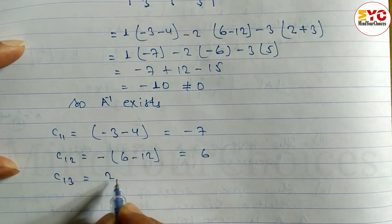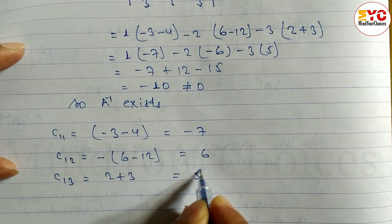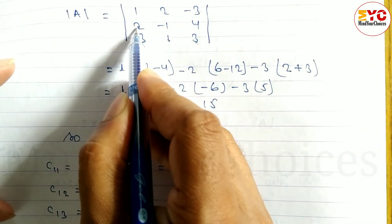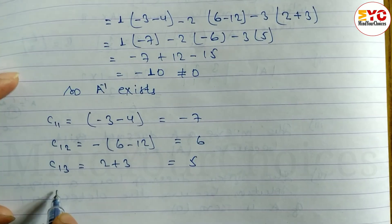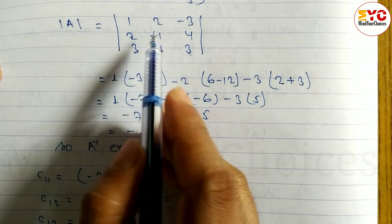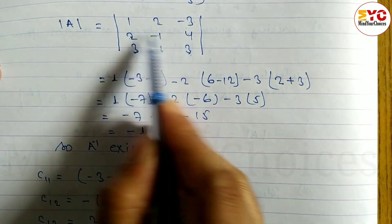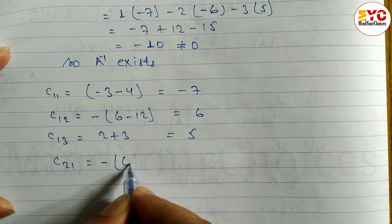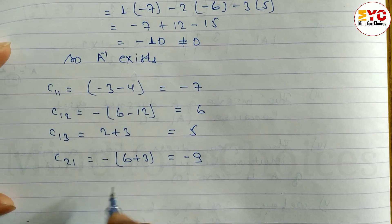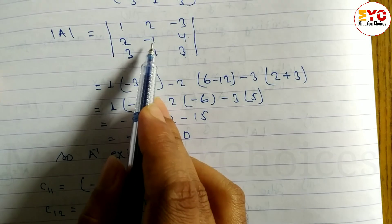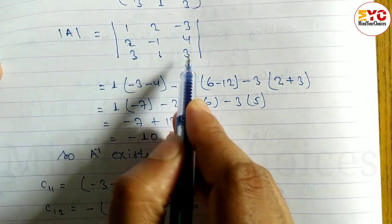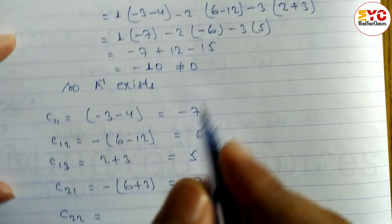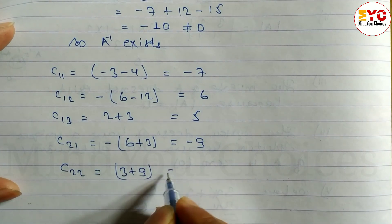For the second row cofactors: C21 — the sign is negative. The minor gives 2 plus 3 = 5, but with sign: 6 plus 3 = minus 9. Cofactor C22: element minus 1, minor gives 1×3 minus 3×1 = 3 plus 9 = 12.